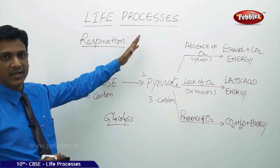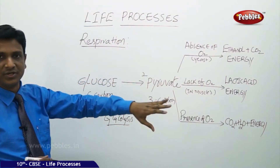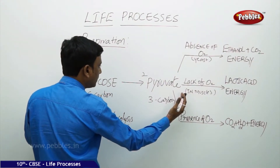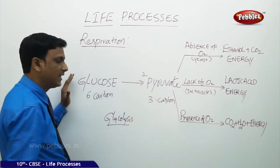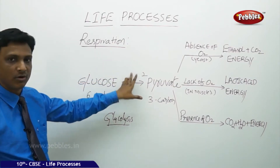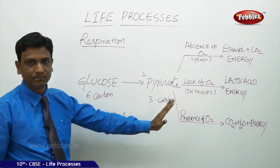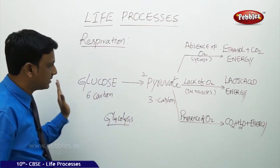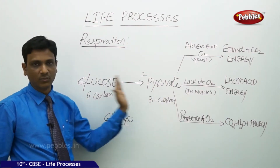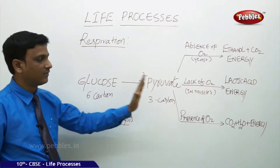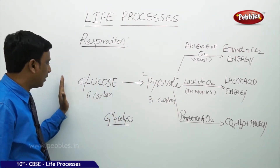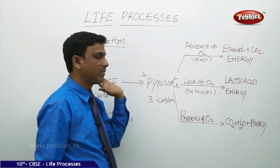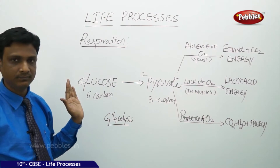Whether it is anaerobic or aerobic respiration, the first part — conversion of glucose to pyruvate — is carried out in the cytoplasm of the cell, and oxygen is not required for this step. This conversion is common to both aerobic and anaerobic organisms. One molecule of 6-carbon glucose is converted to 2 molecules of 3-carbon pyruvic acid.